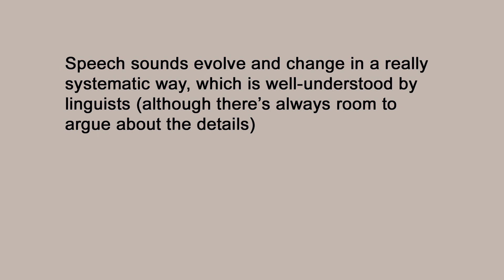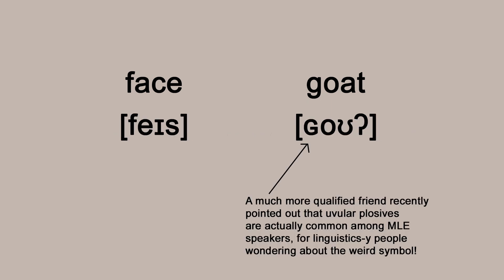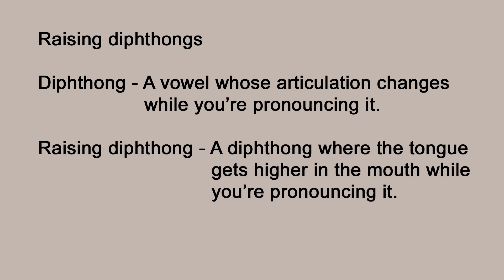For our example, we'll take the vowels in the words 'face' and 'goat' as they were in London in about 1700. I've chosen this example because it's different from modern London pronunciations of these vowels, but because it's so recent we can quite confidently say what the vowel qualities would have been. Nowadays you might hear something like 'face' or 'goat' depending on the speaker — these are called raising diphthongs, because the tongue gets higher in the mouth as you say them.